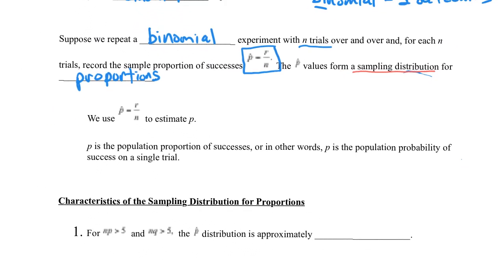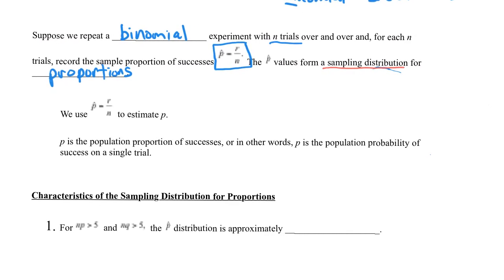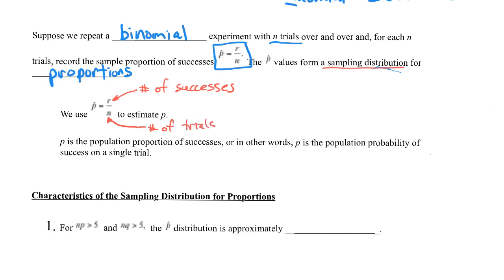We are going to use p-hat, which is r over n, to estimate p. P-hat is the sample proportion and we want to know the population proportion. R, if you remember from when we talked about binomial experiments, is the number of successes. N is the number of trials. So p-hat is just the proportion of successes: number of successes over the number of trials. And p is the population proportion — or in other words, p is the population probability of success on a single trial.